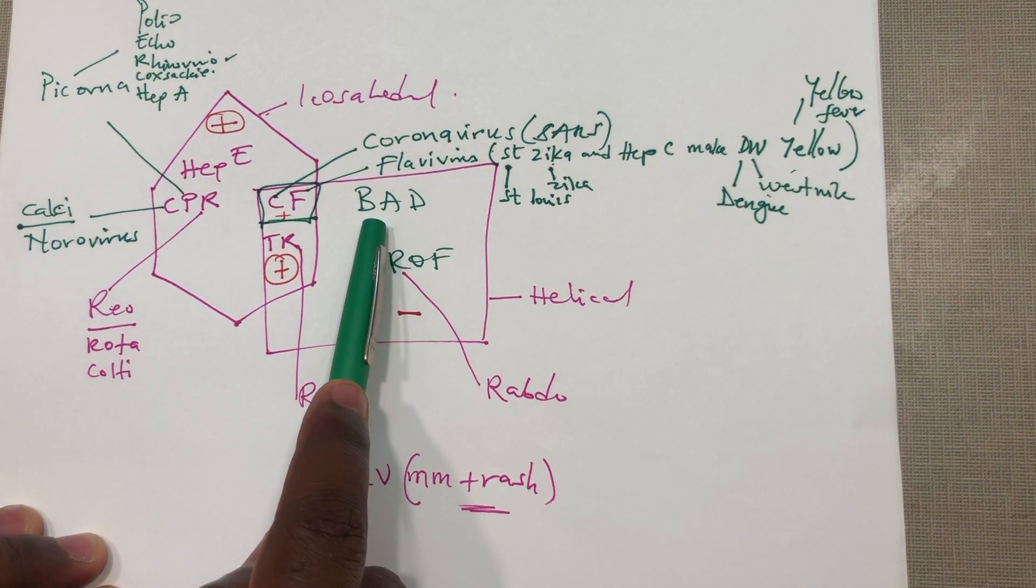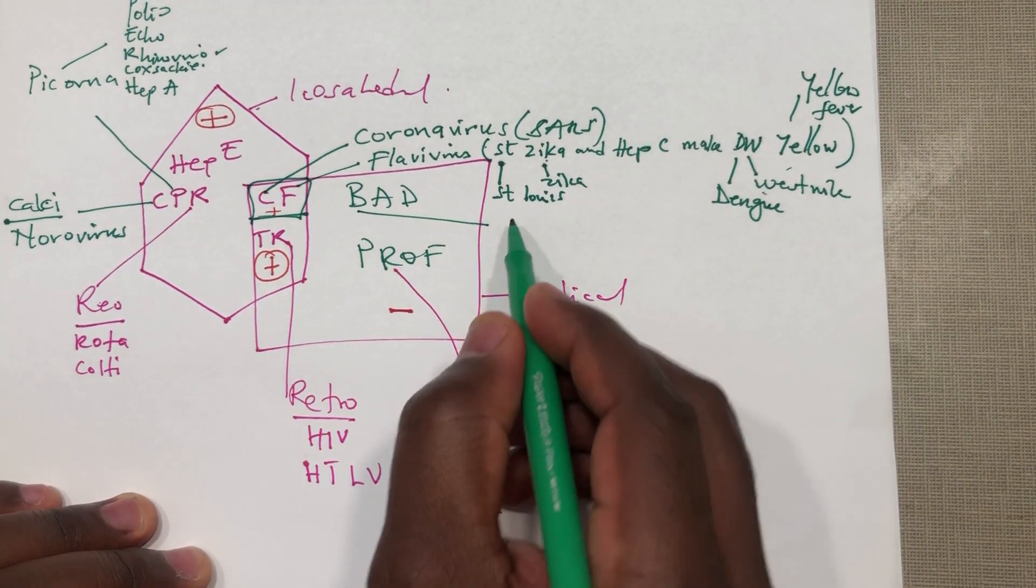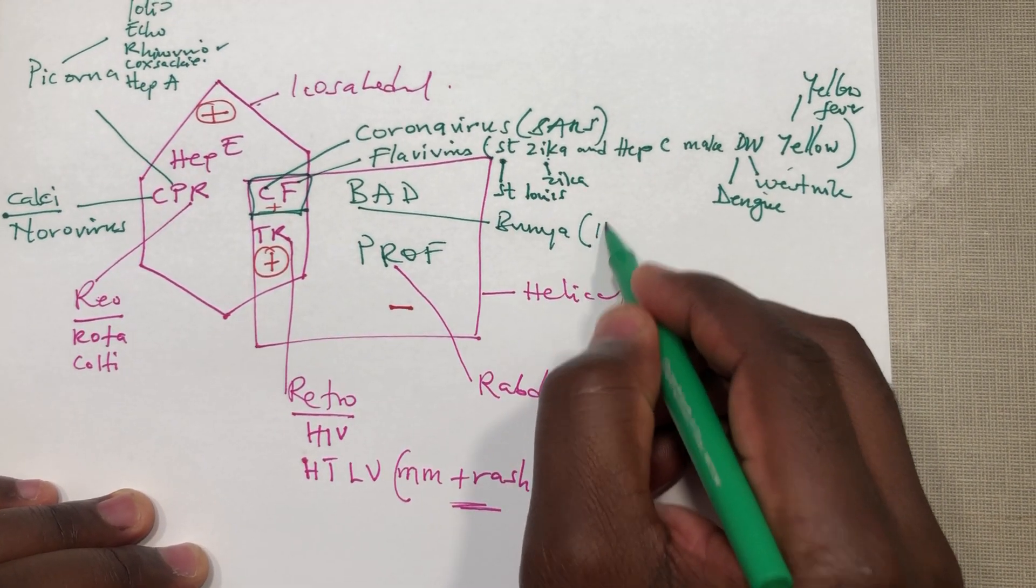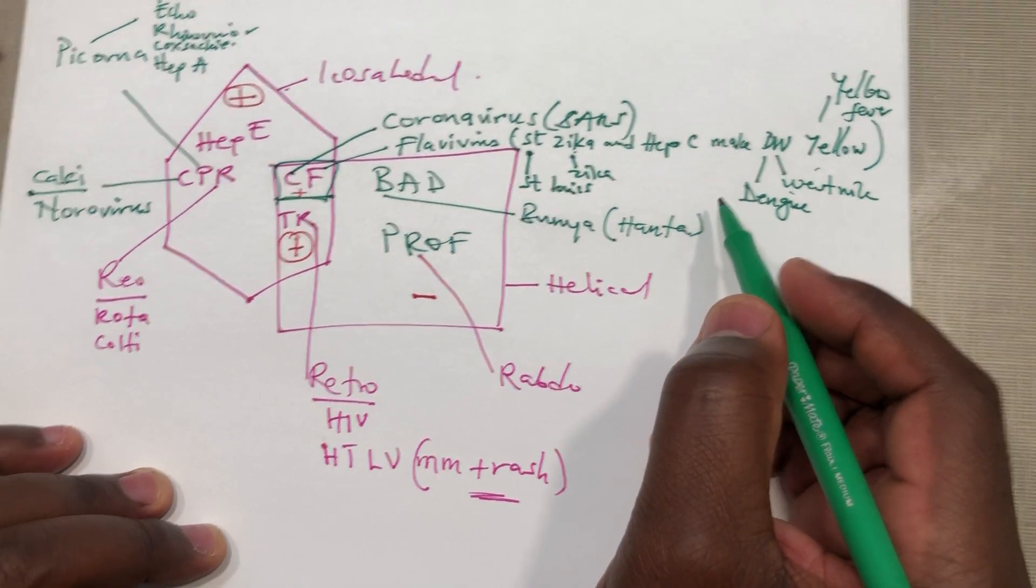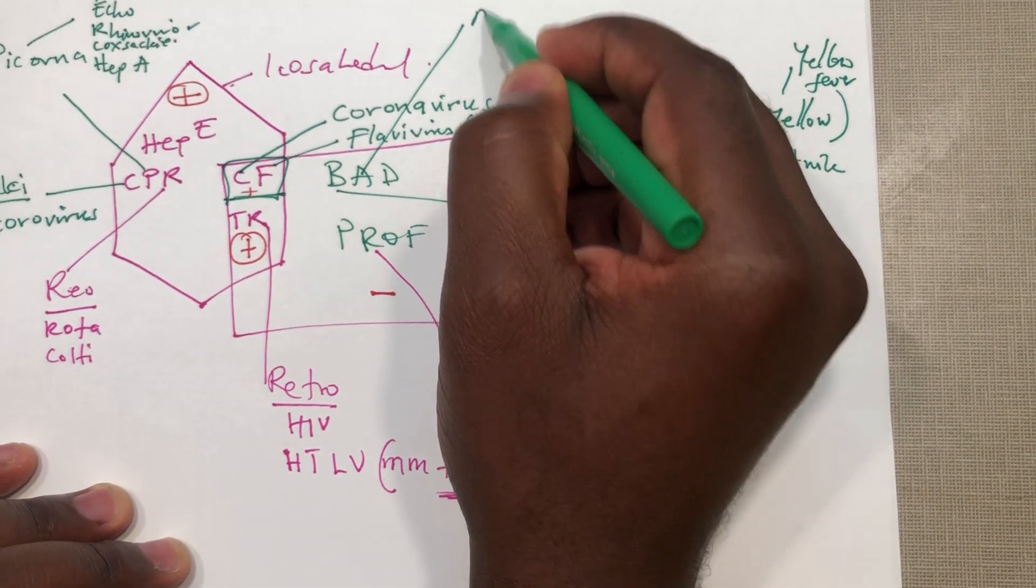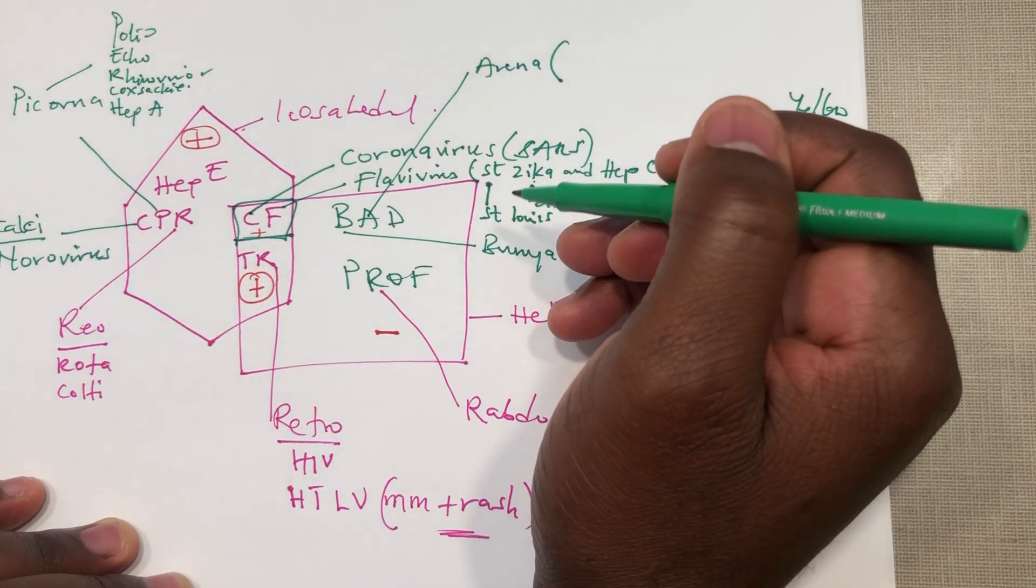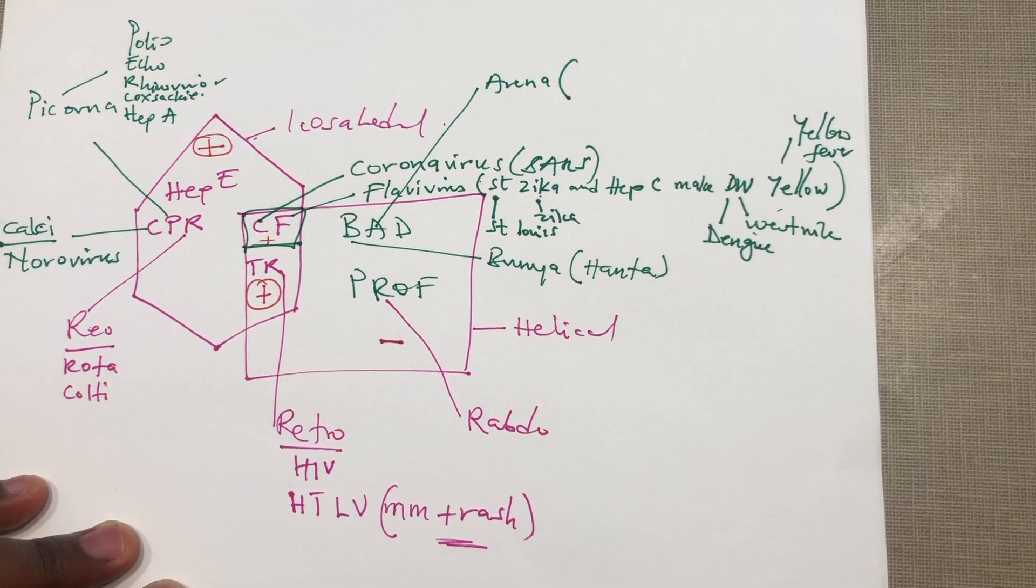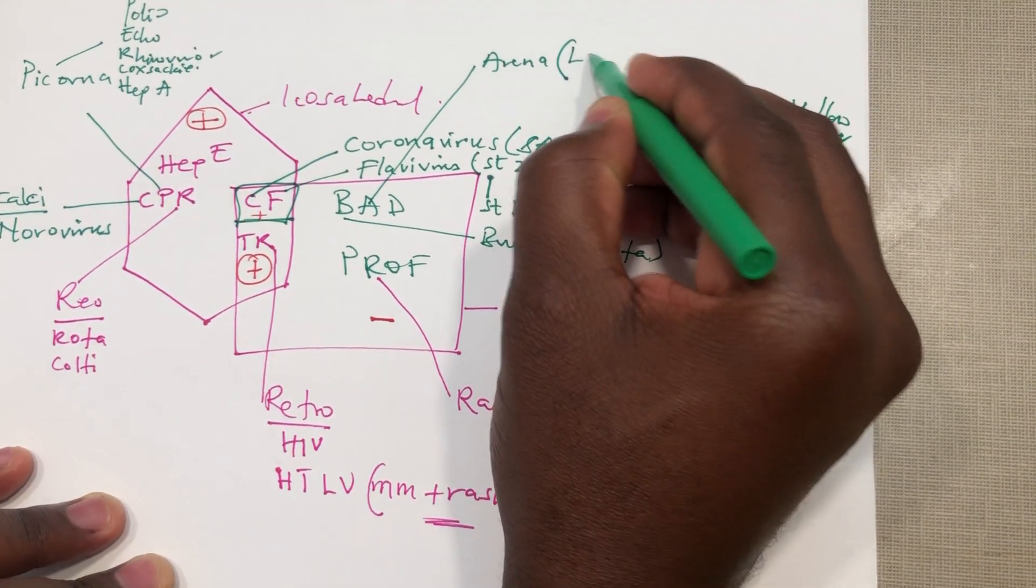Now we have the bunyavirus, an example is the hantavirus. We also have the arenavirus. How I remember this arenavirus is like the sports arena, you will have rodents and those mites over there. We have the Lassa fever virus and we also have LCMV virus.